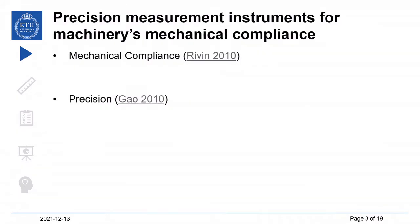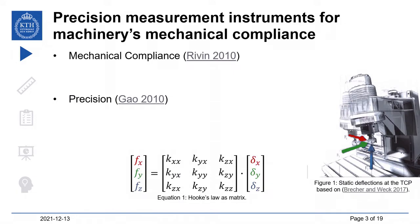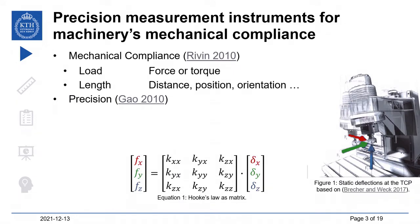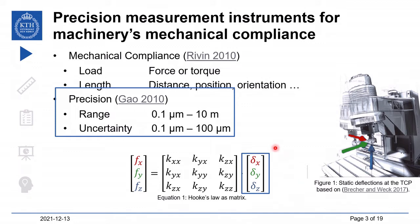For an improved understanding of today's presentation, we define the terms mechanical compliance and precision. Mechanical compliance is the relationship between a mechanical load applied to a structure and the resulting change of its geometry in terms of distance, position, or orientation. Figure 1 visualizes the application of a force on the tool center point and its resulting deflection, most commonly depicted using Hooke's law in equation 1. Precision, in the sense of this work, refers quantitatively to deflections in a range from 0.1 micrometer to 10 millimeter and uncertainties from 0.1 micrometer to 100 micrometer.